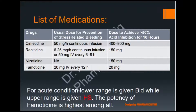For treating Peptic Ulcer Disease with Famotidine, the dose is 20 mg IV every 12 hours. The dose required to achieve 50% acid inhibition for 10 hours is also 20 mg. For acute conditions, the lower range is given BID — twice per day. For Cimetidine, the lower range is 400 mg given twice a day, morning or night. The majority of doctors prescribe H2 receptor antagonists for control of nocturnal acidity. At night time, the higher dose or upper range of about 800 mg is given.